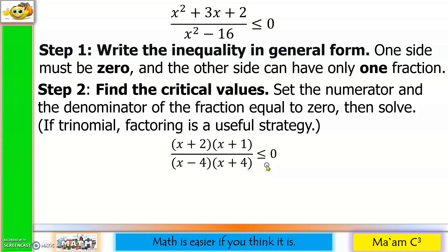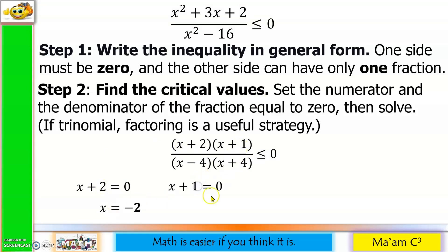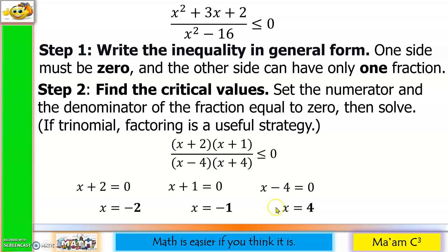Copy less than or equal to 0. We are going to equate each factor to 0 to determine the critical values. Starting with the numerator: x plus 2 equals 0, so x equals negative 2. Next, x plus 1 equals 0, so x equals negative 1. For the denominator: x minus 4 equals 0, so x equals 4. And x plus 4 equals 0, so x equals negative 4.